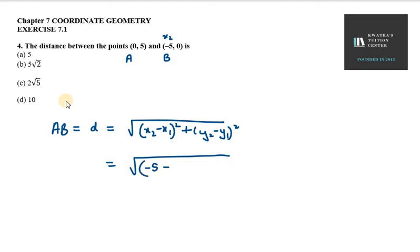Then x1 is 0 square plus y2 minus y1, that is 0 minus 5 whole square. Now on both sides we have minus 5 whole square. So minus 5 whole square is 25 plus 25. 25 plus 25 is under root 50.